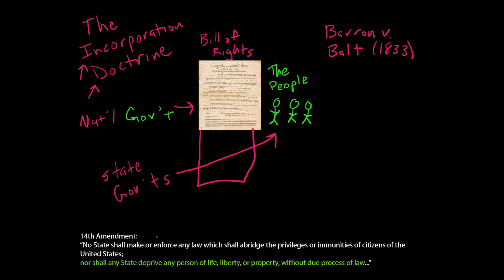After the Civil War, the so-called Civil War amendments were added. One of them was the 14th Amendment. It's a really long amendment, and most constitutional scholars think it's the most important amendment. It's largely because it applies the Bill of Rights to the states and incorporates the Bill of Rights. There are a couple of clauses in the 14th Amendment that seem to incorporate the Bill of Rights to the states.